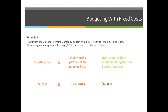Going through an example: how much should Jones Printing Company budget annually for their building lease? They've signed an agreement to pay $5,250 per month for the next six years. So we take $5,250 multiplied by 12 months in one year, and we get $63,000 — that's how much they need to budget just for the lease payment on the building.